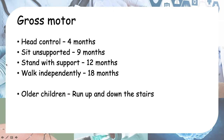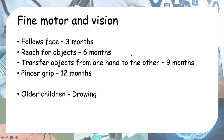Next is fine motor and vision. The four milestones are: follow face, reach for objects, transfer objects from one hand to the other, and pincer grip. The first milestone is the vision part; after they can see an object they reach for it, then transfer it, then use pincer grip — gripping with only the thumb and index finger. The numbers to remember are three, six, nine, and twelve months.